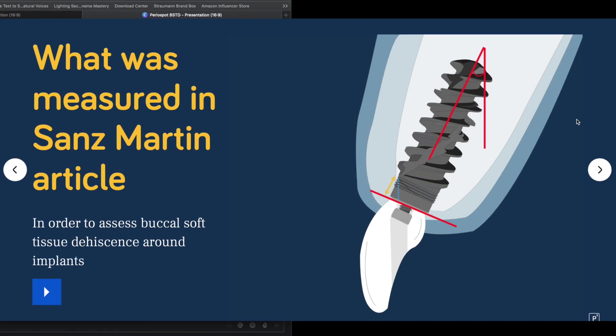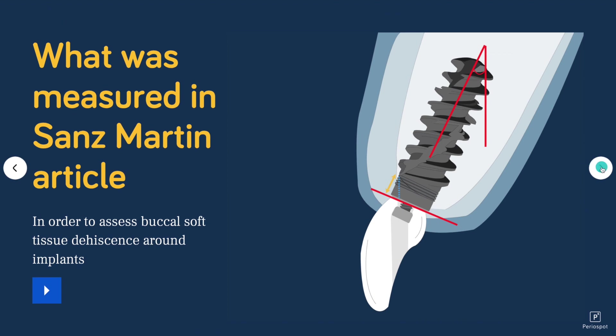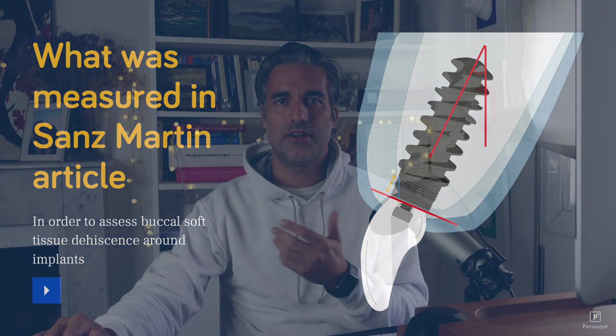In this article, there is an importance of having adequate thickness for the soft tissue, and also the facial bone crest. What was measured in the article by Sainz-Martín in 2019? In order to assess the buccal soft tissue dehiscences around implants, what were the considerations they took to really understand why these dehiscences appear in implants?